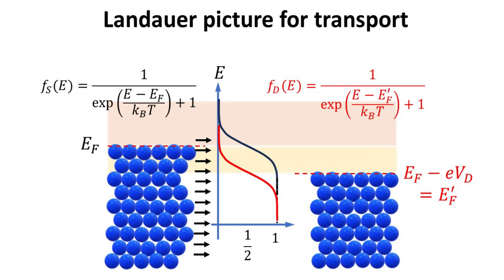The electron occupation on the drain side will in general be different from the source, due to the applied drain voltage Vd. Drain electrons with finite occupation can also transmit across the channel to the source, in accordance to the same transmission coefficient t as before.